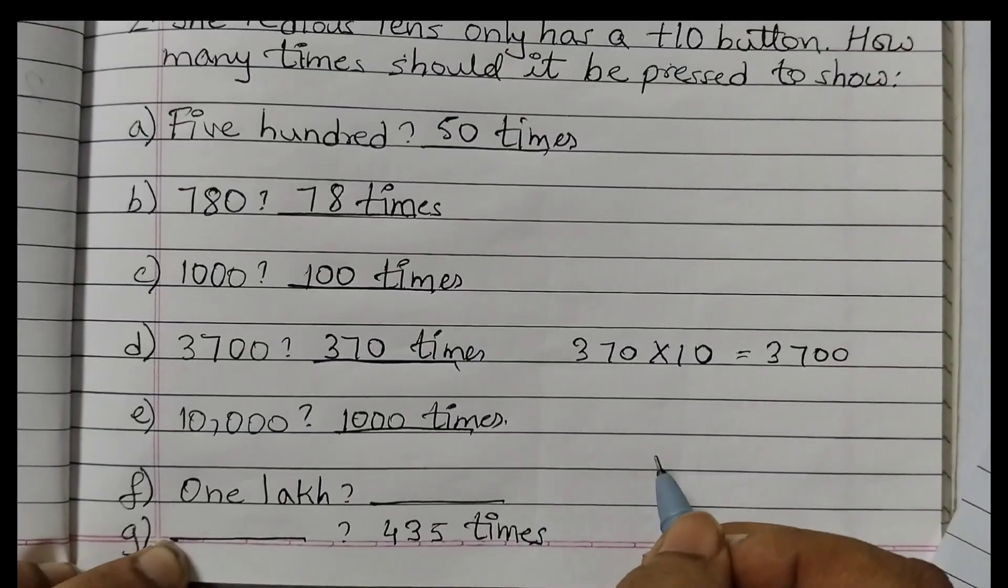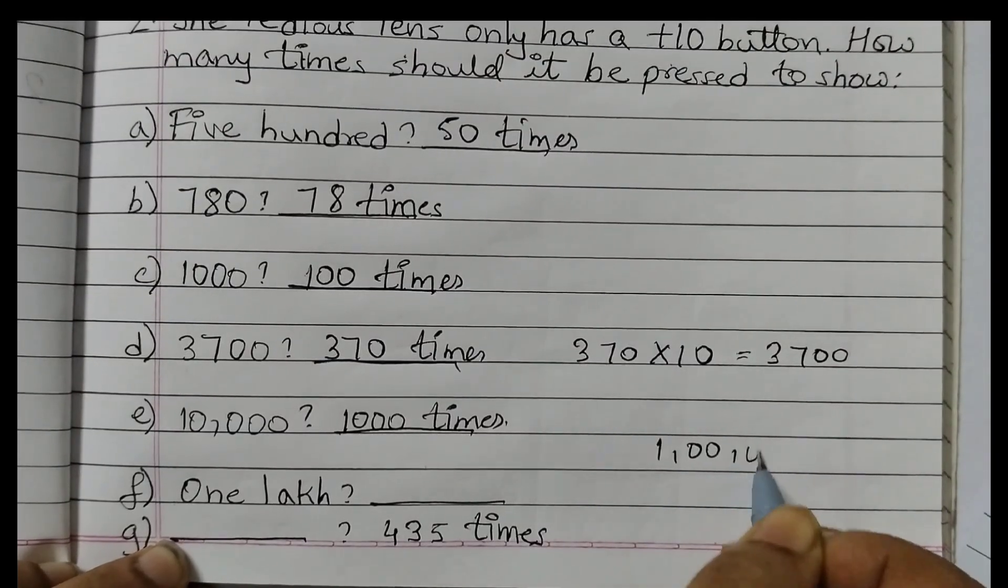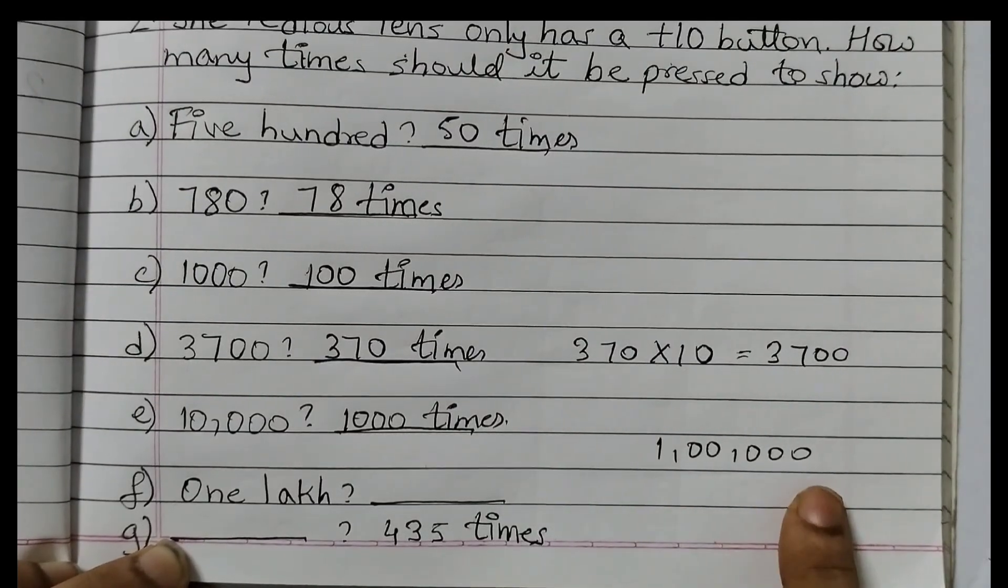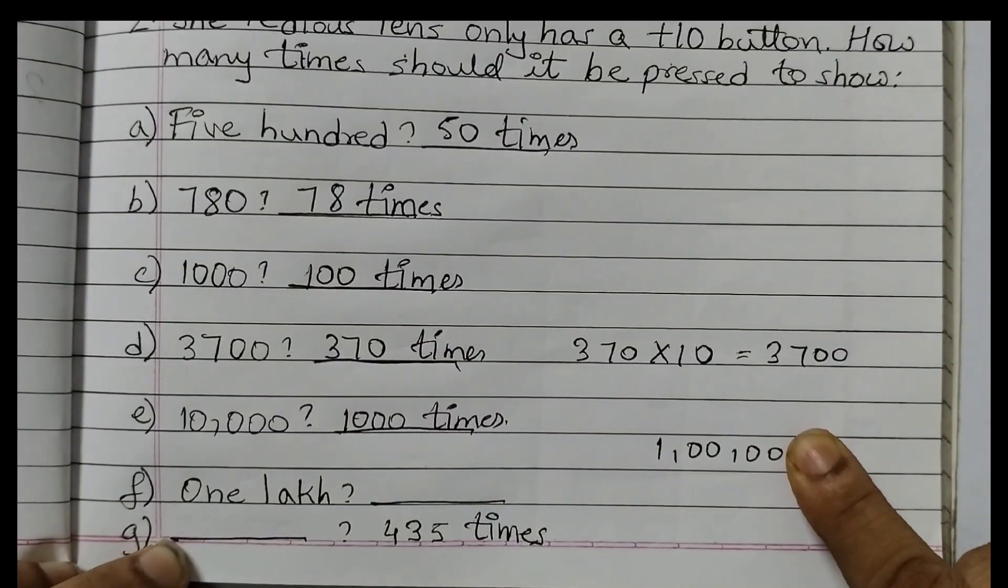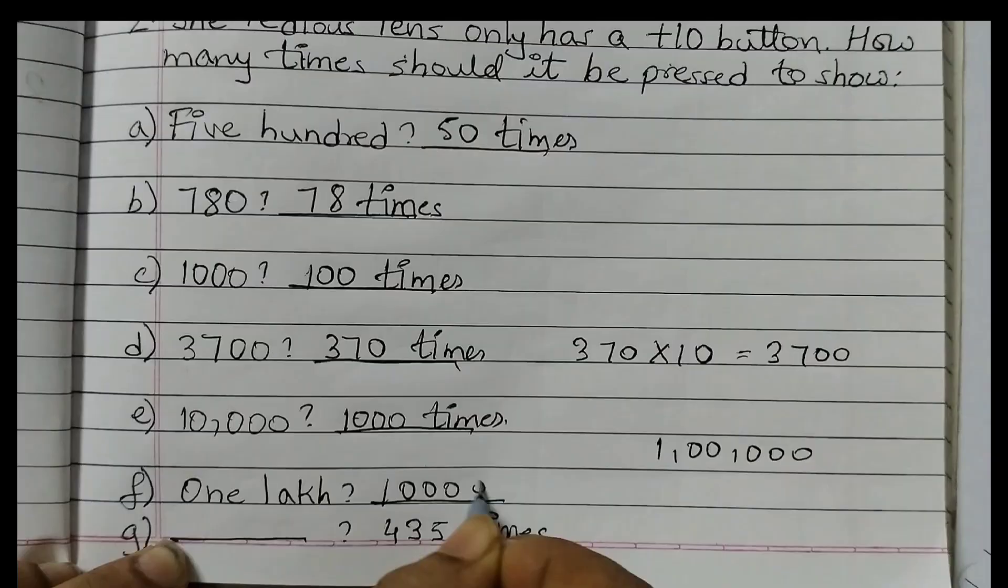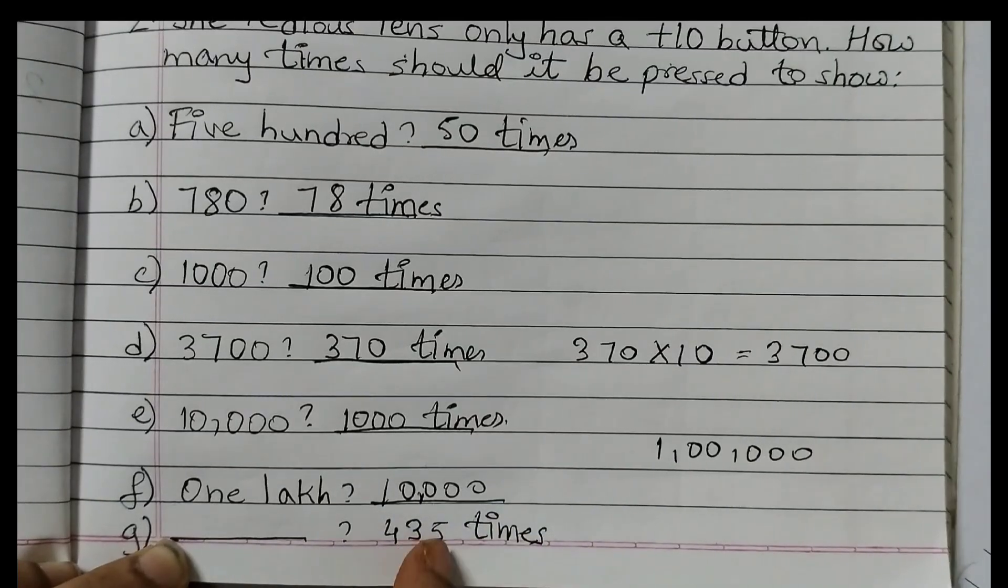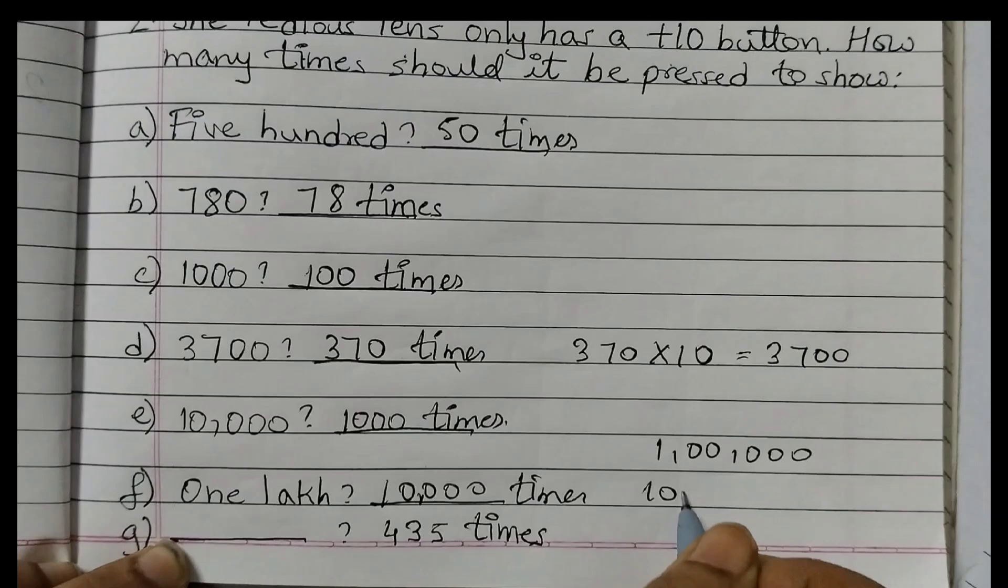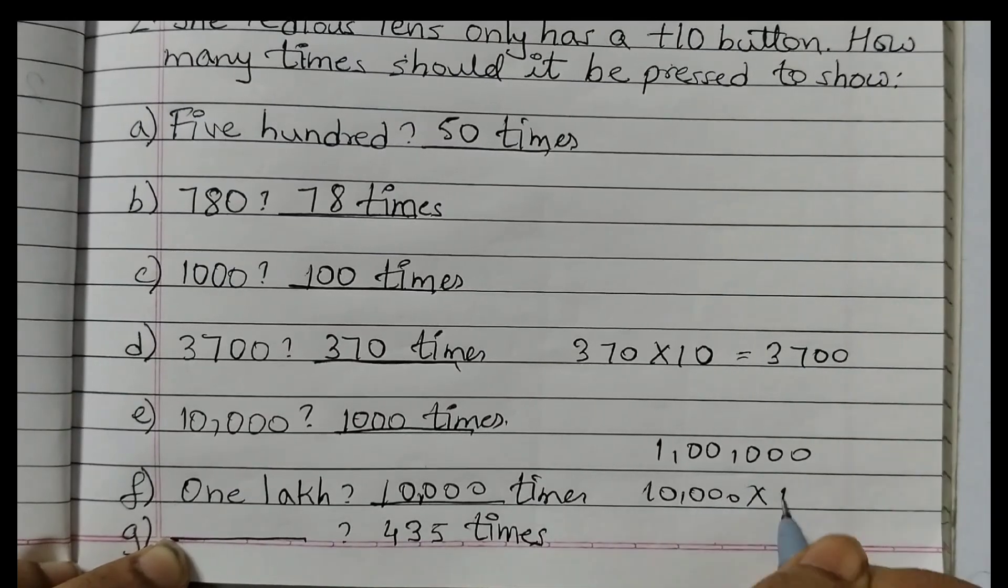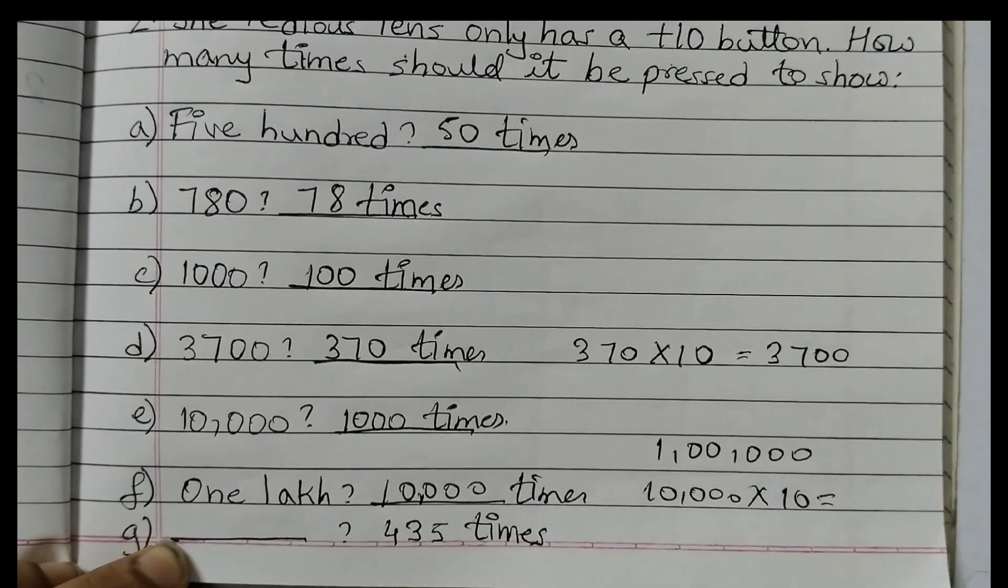1 lakh. 1 lakh is 1, 2, 3, 4, 5. 5 zeros. I will just hide this 0. So we get 1 and then 4 zeros. 1 lakh. So this is equal to 10,000 times. 10,000 into 10 will give you 1 lakh.